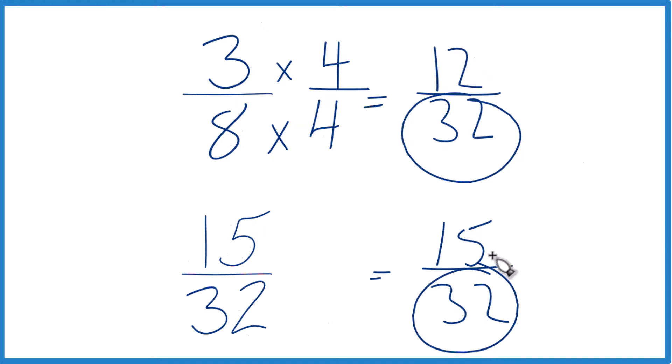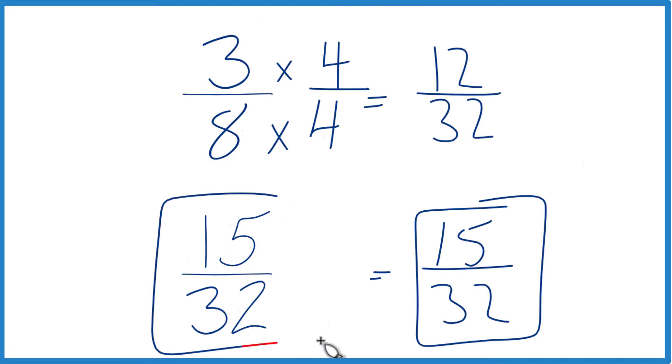Just compare the numerators. And you can see that 15 32nds, that's larger than 12 32nds by 3 32nds. So since this is larger and these are the same thing here, 15 32nds is larger than 3 eighths.